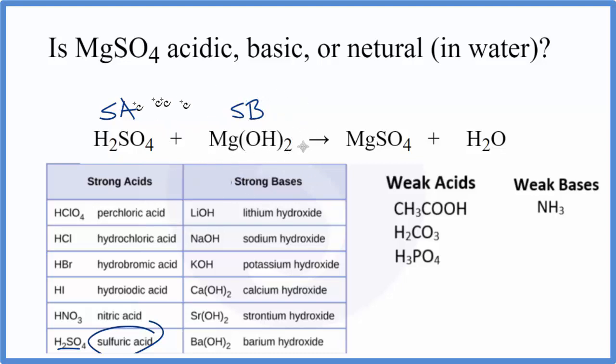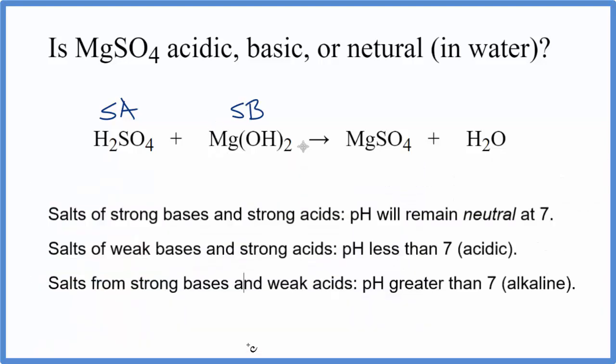So we have the strength of our acid and our base. Now we can use the rules. So we're looking for a strong acid and a strong base. Here's a strong base and a strong acid. So that works. We have a strong acid and a strong base. When these two things react in a neutralization reaction, the pH, according to our rules, should be neutral at 7.